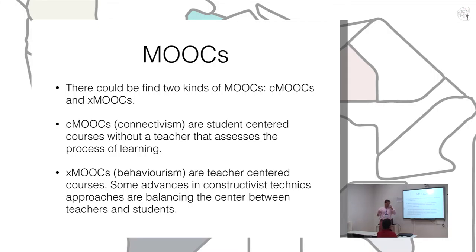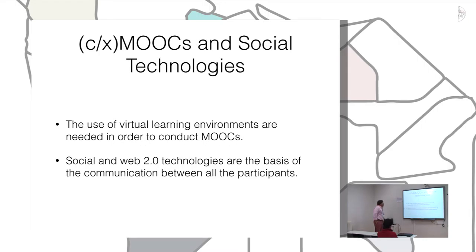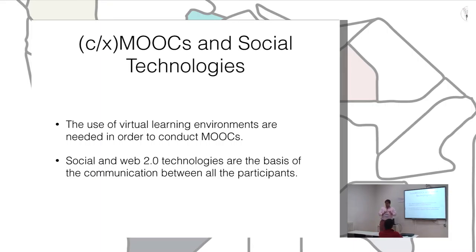In xMOOCs, you have to fulfill activities; you follow a content line and finally reach course completion. In this experiment, we have one classroom of 60 students used as a control group. They work in a classroom with Moodle, doing the same activities, with the same contents, forums, and wikis. Then we have 300 students from different schools all over Spain.